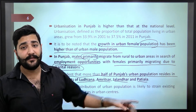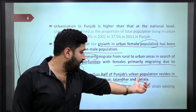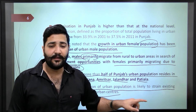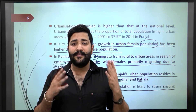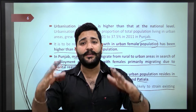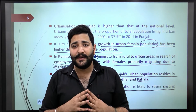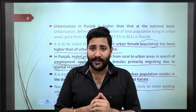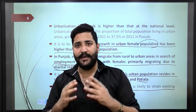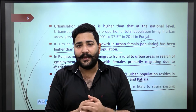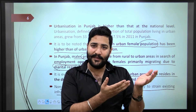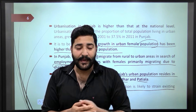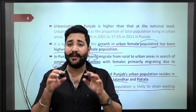More than 50% of Punjab's urban population resides in these four major cities. The non-uniform distribution of urban population is likely to strain existing infrastructure in urban areas. When so many people are concentrated in four cities, it leads to slum areas developing and very common current issues like parking conflicts — pressure on urban infrastructure is increasing.